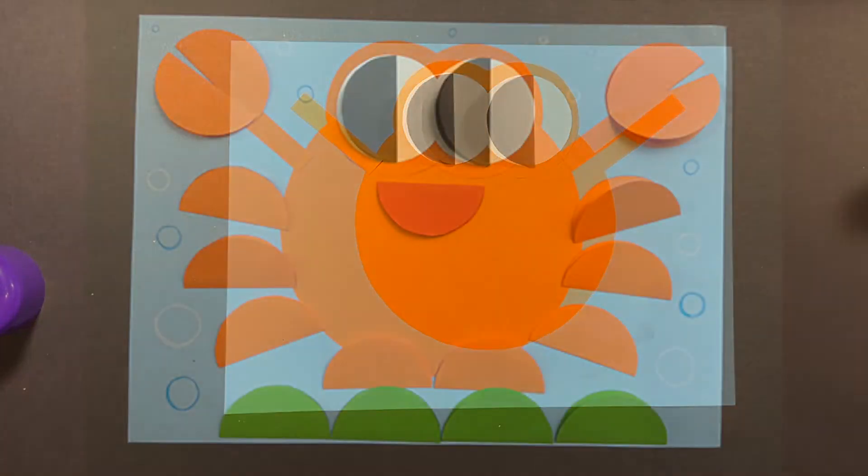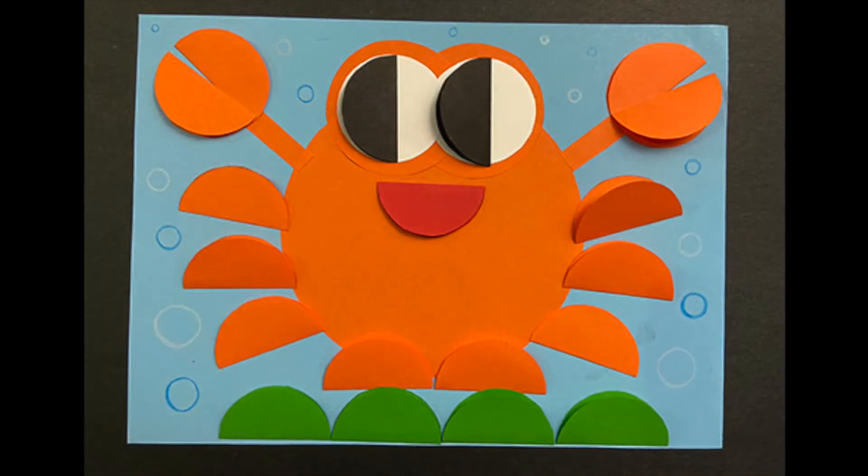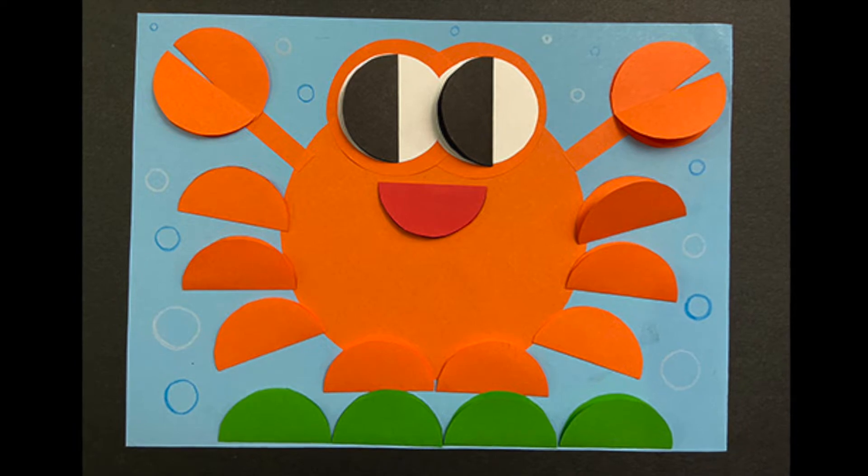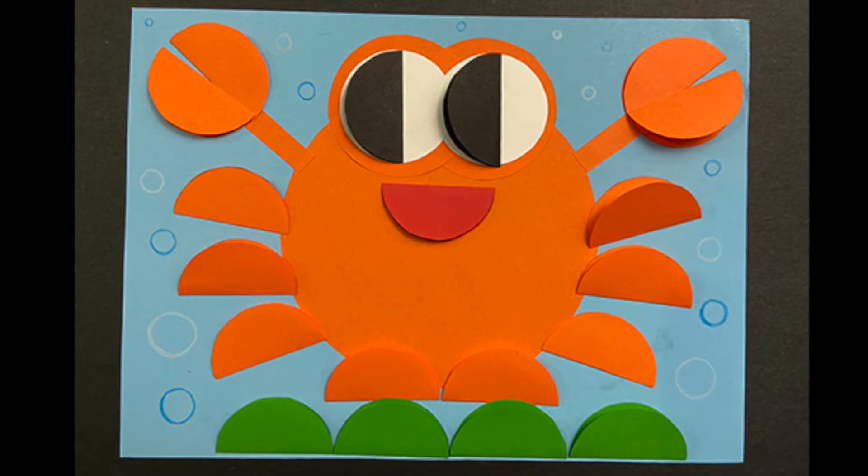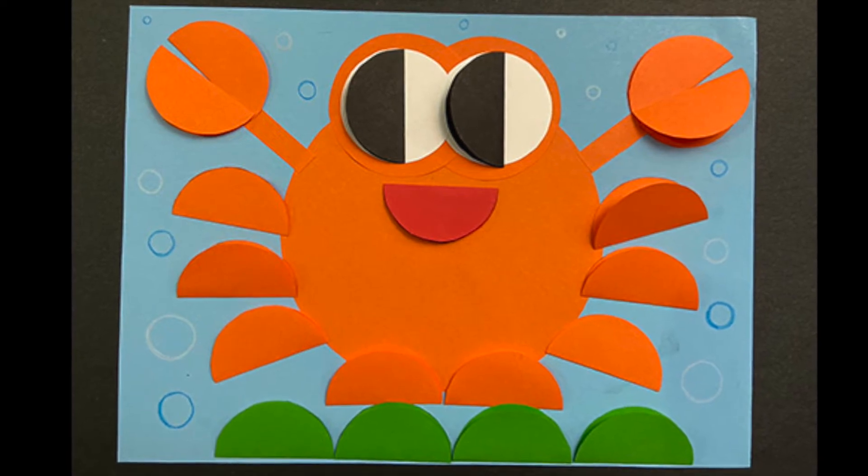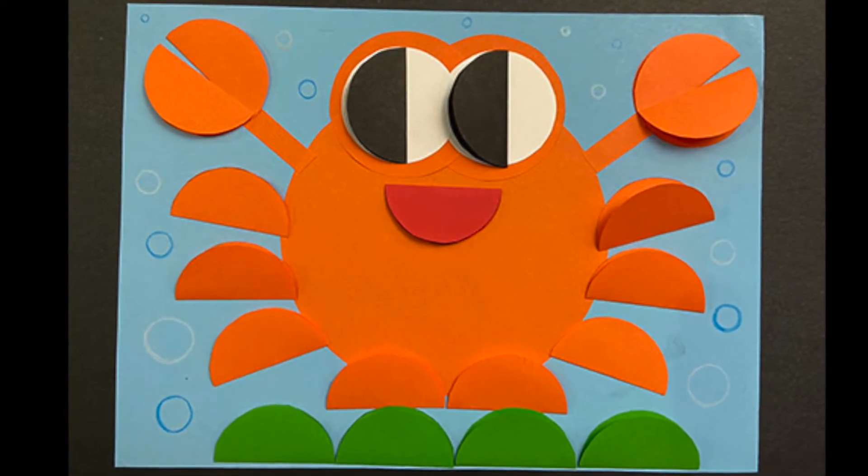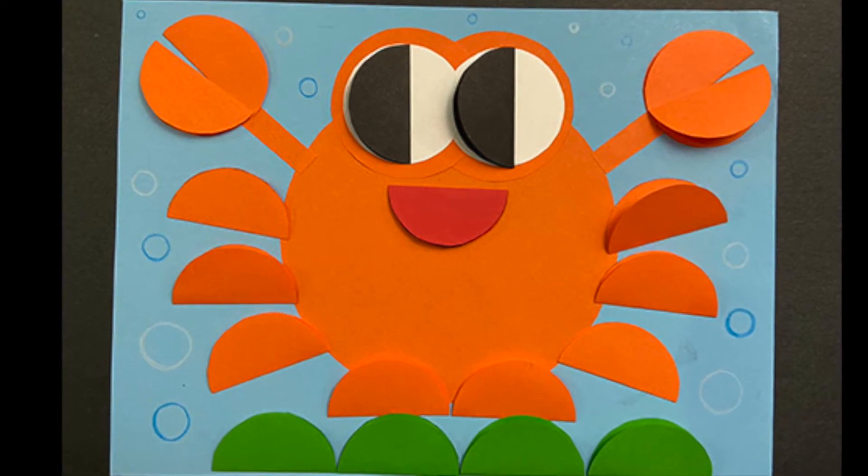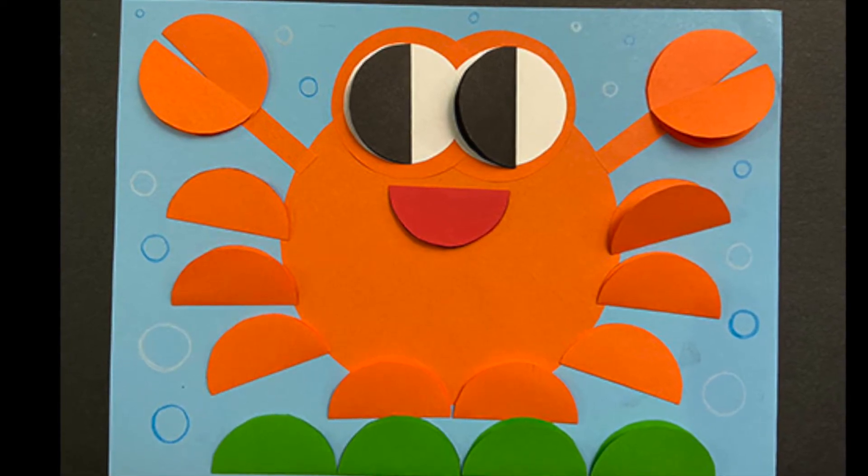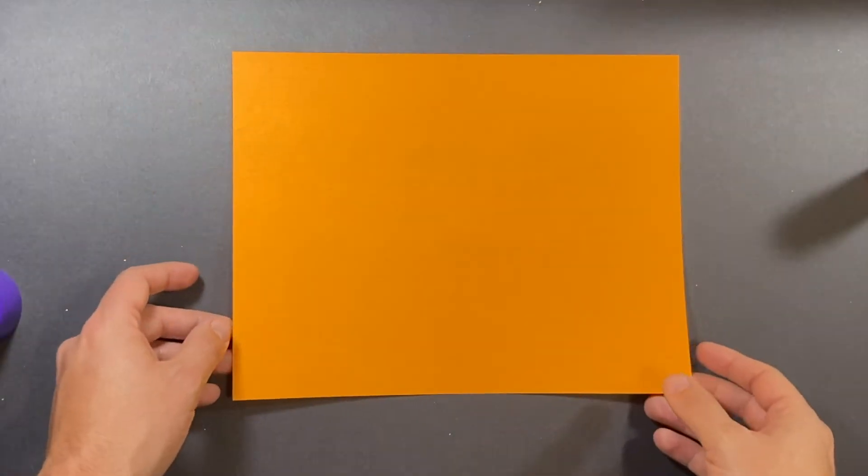Okay, so our next step, if you remember, is we need to make a whole bunch more taco shapes. And now that you know how to do it, I want you to count up how many tacos does this crab have. Count them all very carefully. And I'm going to ask someone to raise their hand and let me know what they think is the total number of tacos on this project. Okay, let's continue.